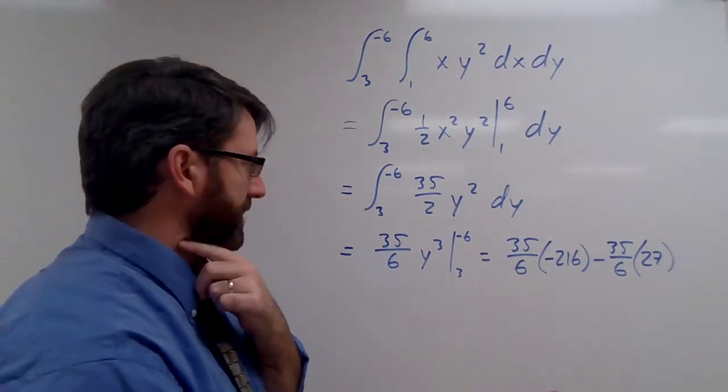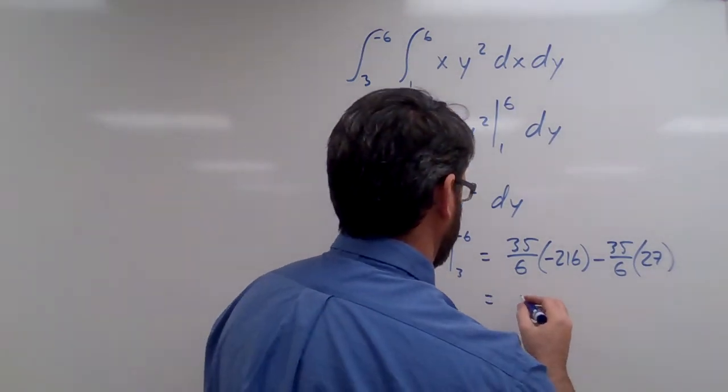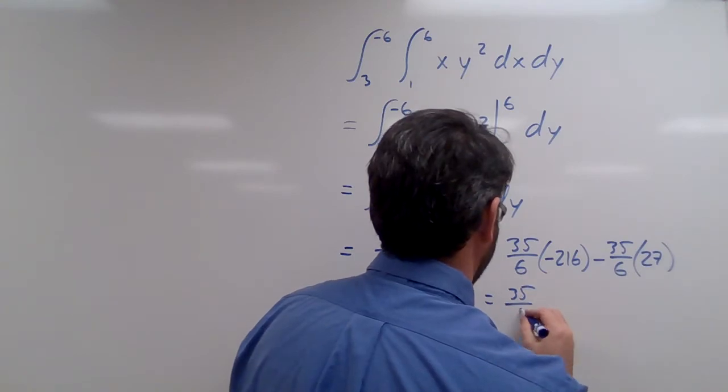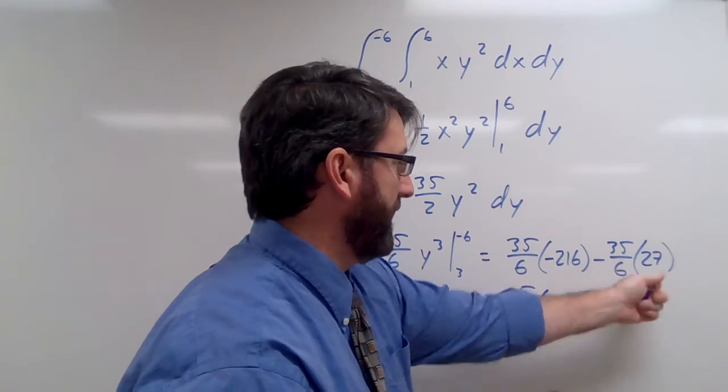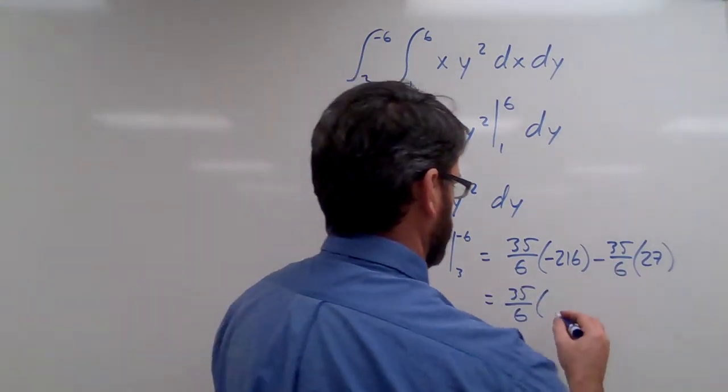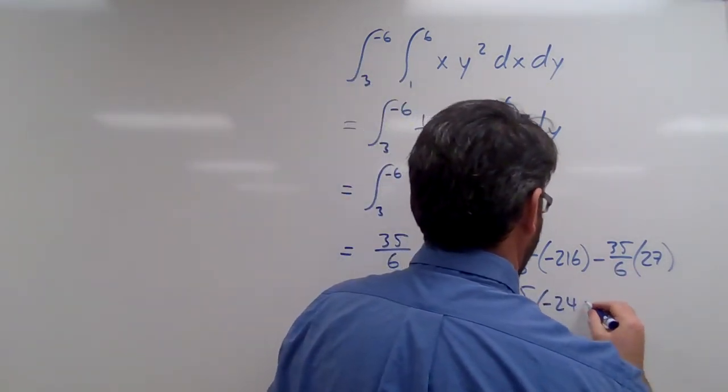Okay, so this is going to be equal to 35 over 6 times negative 27, or negative 216 minus 27 is negative 243.